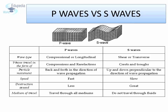Comparing P waves and S waves: P waves are compressional or longitudinal, while S waves are shear or transverse. P waves travel as compressions and rarefactions, while S waves travel as crests and troughs. P waves make particles move back and forth in the direction of wave propagation, whereas S waves make particles move up and down perpendicular to it. P waves move fast while S waves move slow. P waves cause less destruction while S waves cause great destruction. And finally, P waves can travel through all mediums whereas S waves cannot travel through fluids.